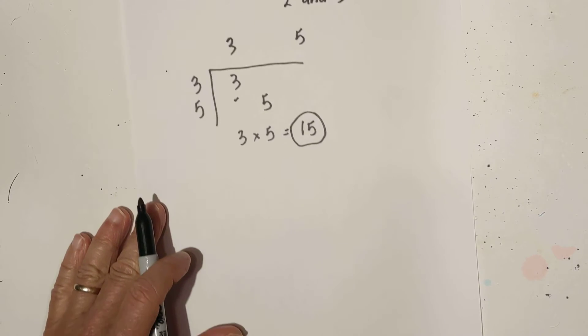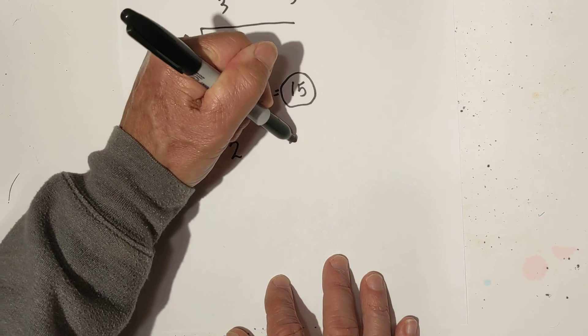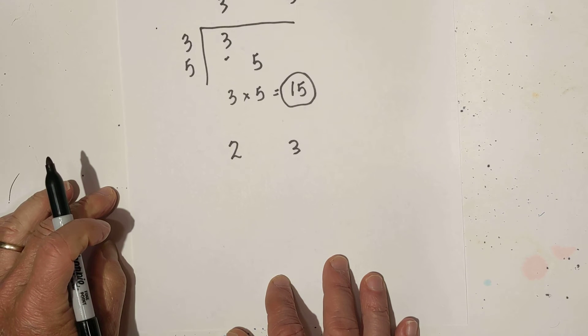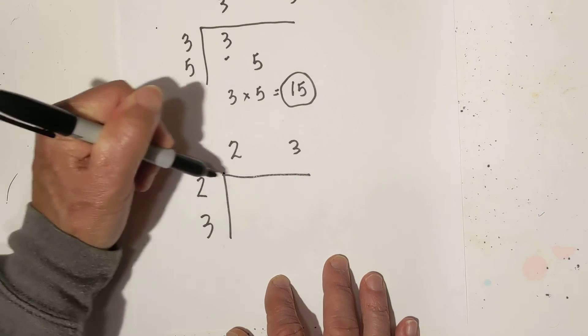Now let's do the same thing for 2 and 3. Let's create a factor tree for both of them. Well, there's no factor tree because they're both prime, so I'm going to draw my chart and write their factors in it.